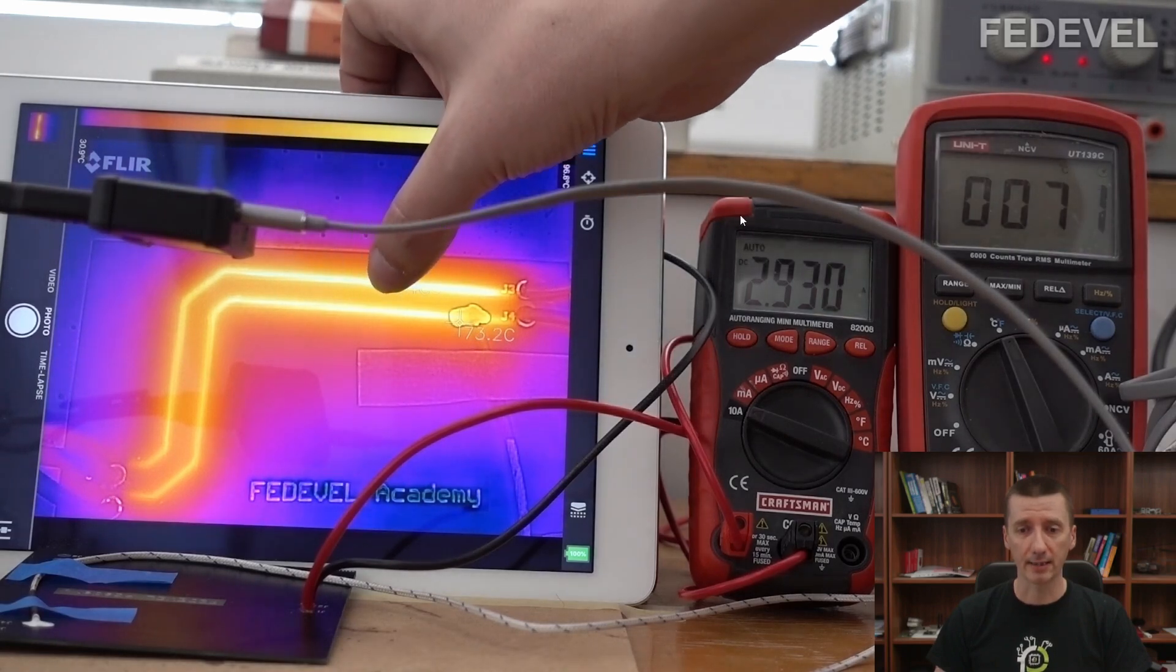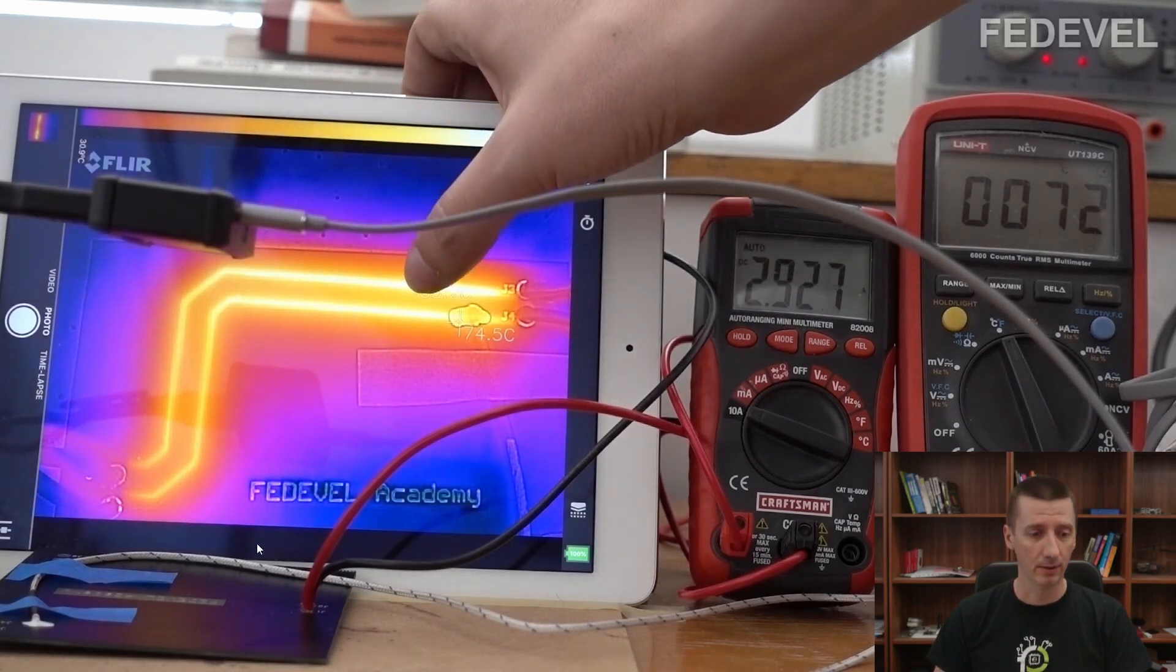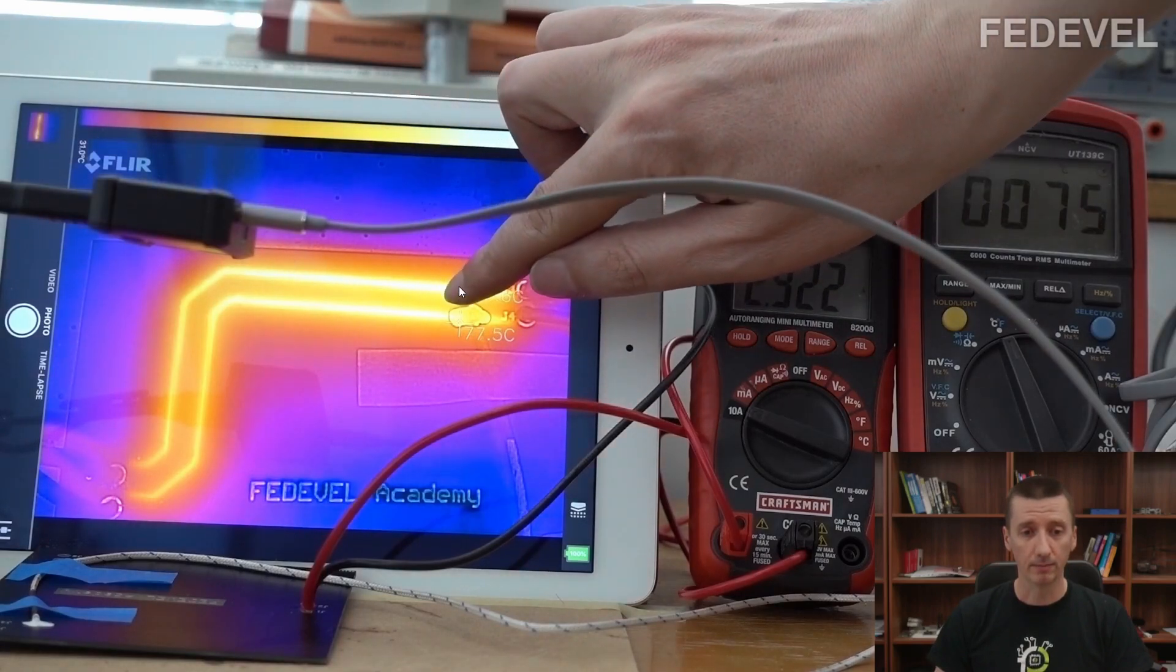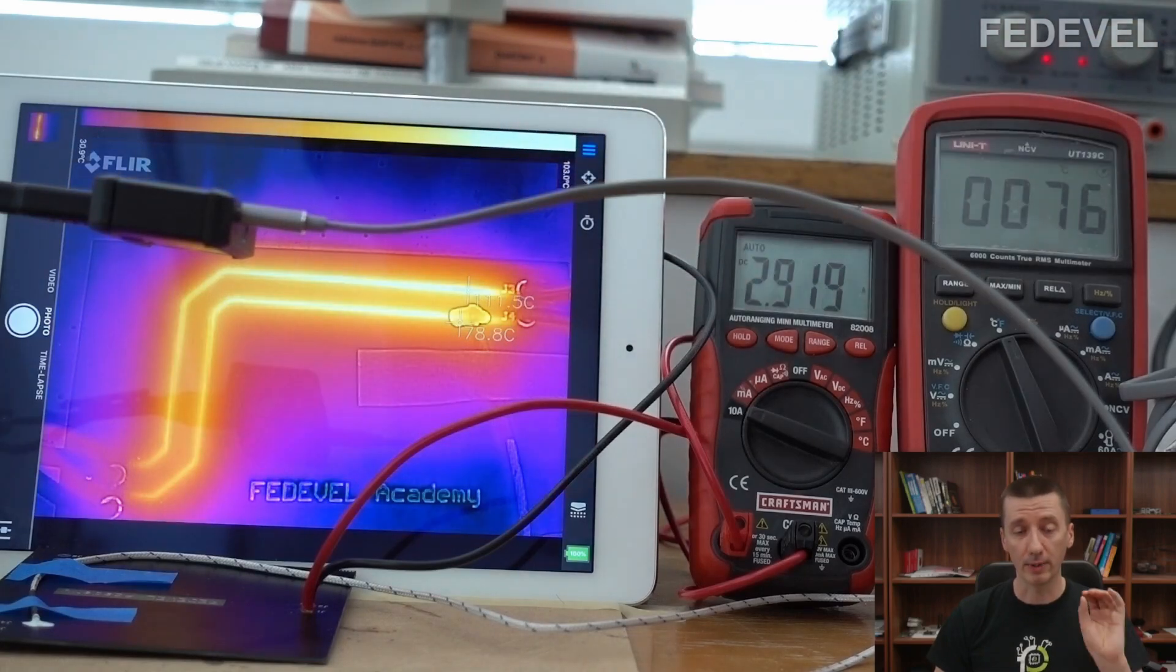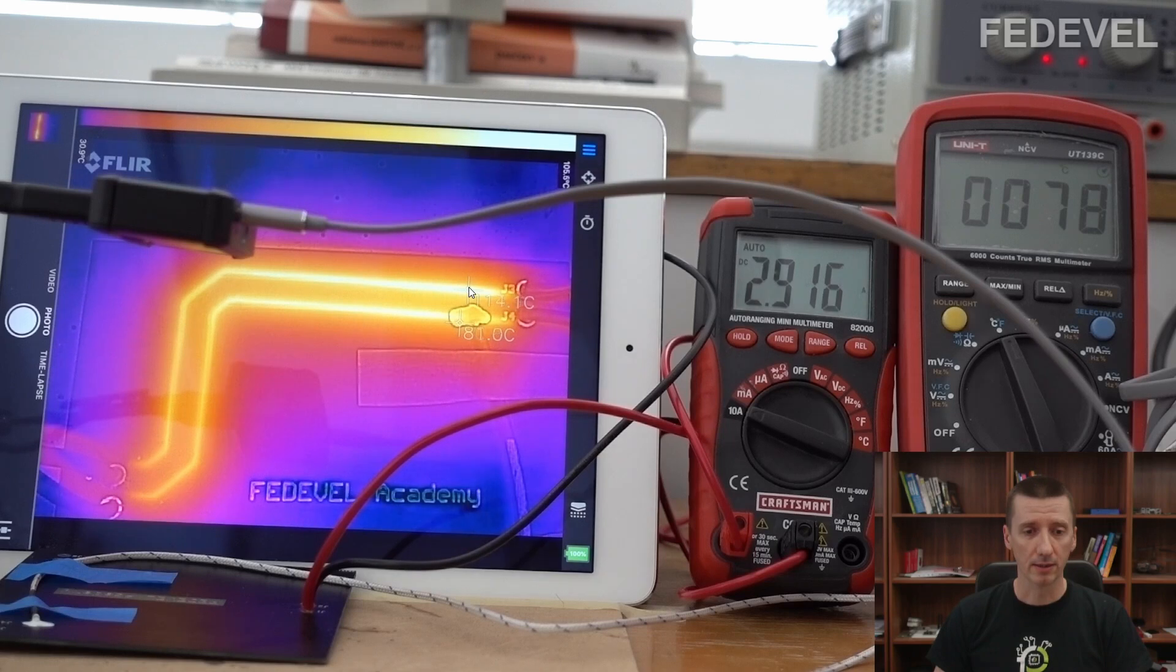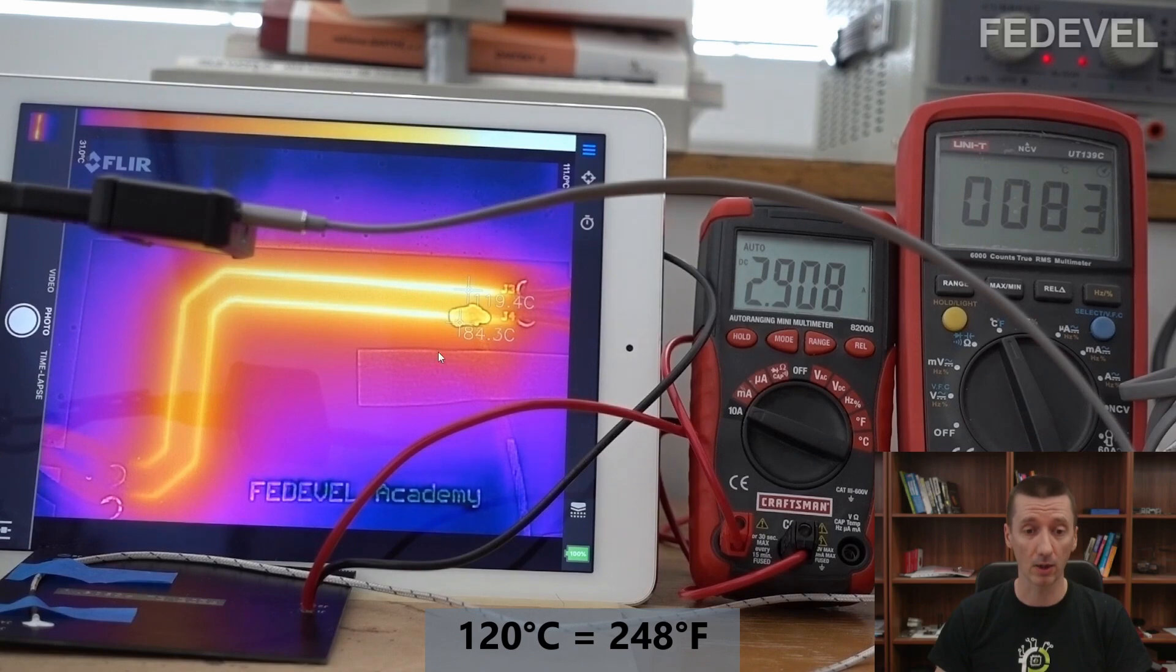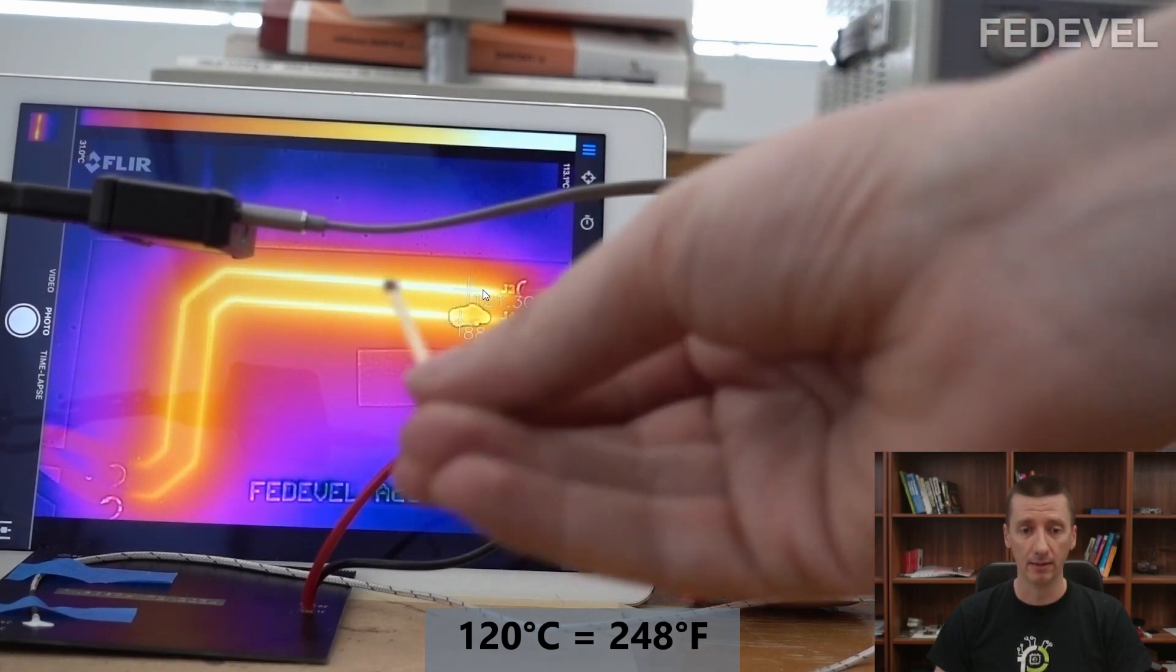Now we are running 3 amps through the track and I moved the point where we read the temperature because you maybe notice the track doesn't have same temperature everywhere. Here it is a little bit colder and here it is really hot. 120 degrees Celsius. Wow.